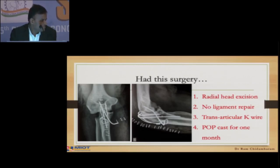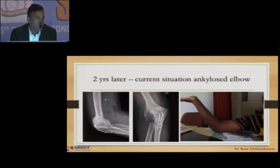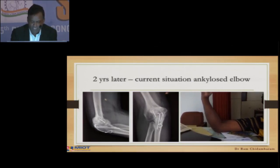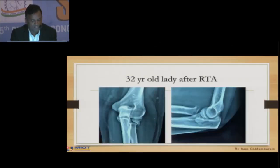POP cast for one month. Two years later, this is the current situation: an ankylosed elbow. Nothing could be done. Second, there is another disaster case presentation.